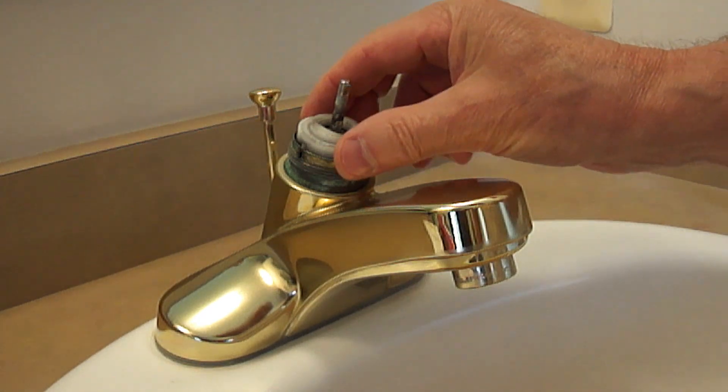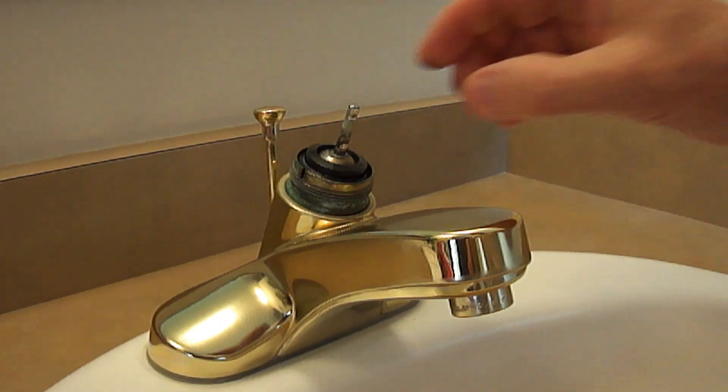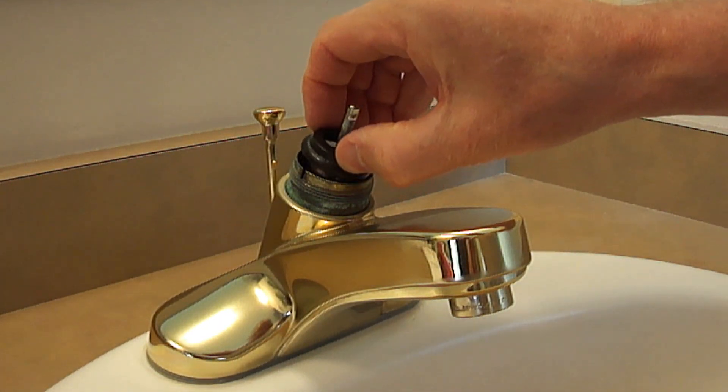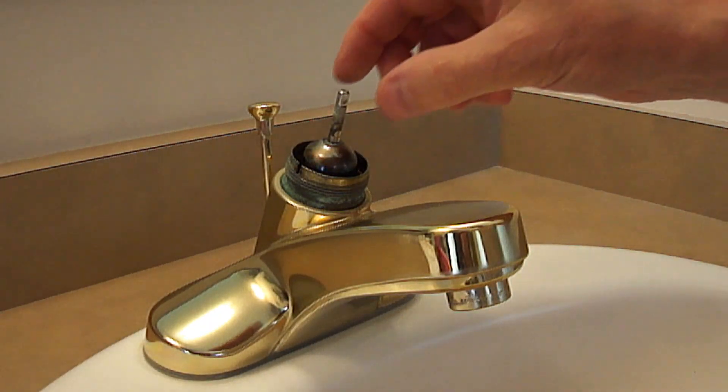Next, we'll remove this plastic collar. Next, we'll remove this rubber collar. Now you can remove the ball assembly.